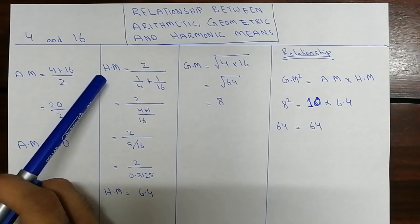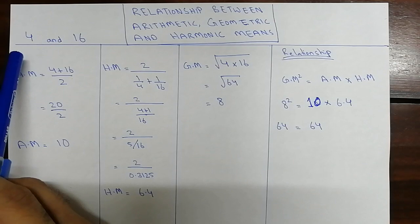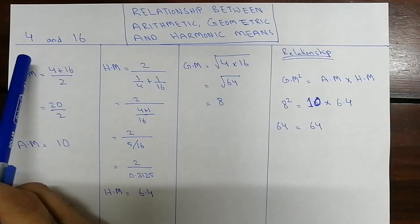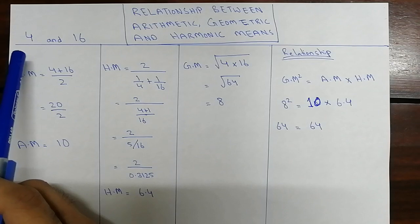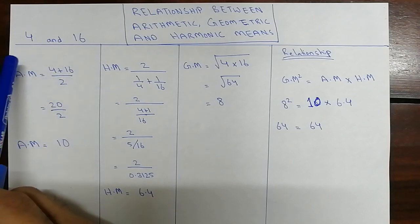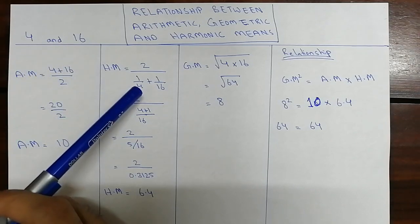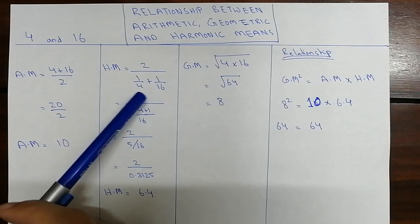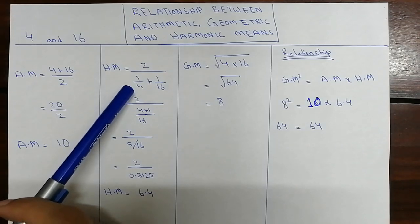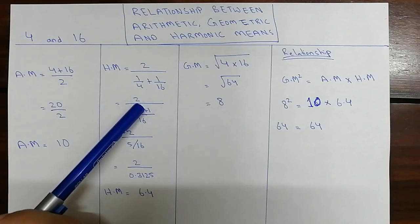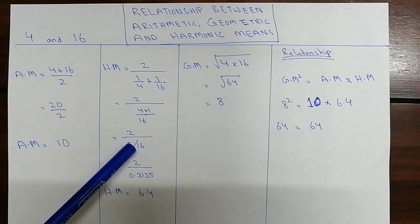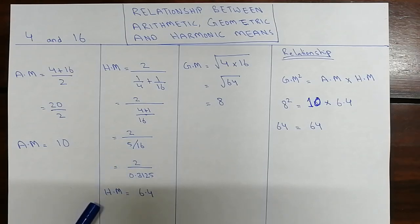Next, we take the harmonic mean. The harmonic mean equals the total number of values divided by the sum of the reciprocals of the numbers. We have 2 values — 4 and 16 — so it's 2 divided by (1/4 + 1/16). Taking the LCM of 4 and 16, which is 16, we get 2 divided by 5/16, giving a harmonic mean of 6.4.